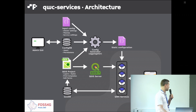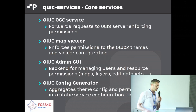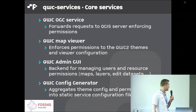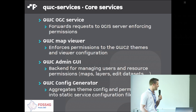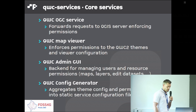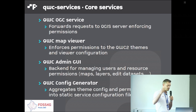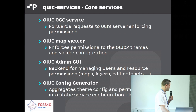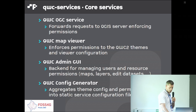The core QWC services on which the entire application relies include: the OGC service, which acts as a proxy between the QGIS server and web client enforcing all permissions configured in the admin GUI; the map viewer, which serves a viewer configuration with enforced permissions; the admin GUI, which is the backend for managing resources and users; and the config generator, which is the configuration aggregator we discussed.